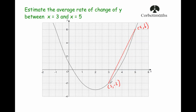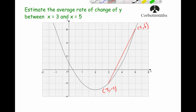We're going to use rise over run, making a right-angle triangle. We have the point (3, -2) and we make it into a right-angle triangle to work out the gradient of the chord. The run is equal to 2, going from x=3 to x=5. The rise is equal to 8, because we've gone from -2 up to 6. So gradient equals rise over run: 8 divided by 2 equals 4. The average rate of change of y between x equals 3 and x equals 5 is 4.